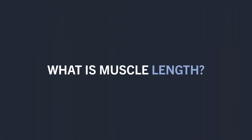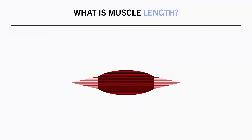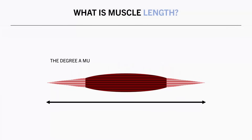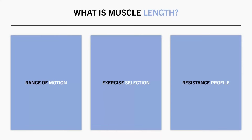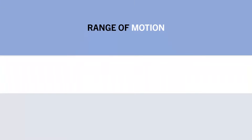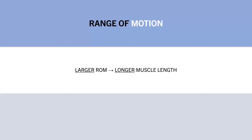First, let's cover what exactly muscle length means. This simply refers to the amount a muscle is stretched during resistance exercises. There are three primary ways in which muscle length can be manipulated during resistance training. The first and most obvious is via range of motion. Training through a larger range of motion typically results in training at a longer muscle length, while partial range of motion training generally limits the degree of lengthening occurring at the muscle.